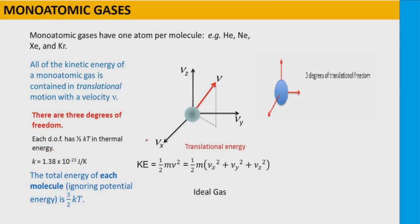In the case of monoatomic gases, it has one atom per molecule — examples include helium, neon, xenon, krypton, etc. This atom can have three degrees of translational motion, and hence a monoatomic gas will have three degrees of freedom. For each degree of freedom, the energy associated is half kT. Therefore, the total energy of the molecule is 3/2 kT. In case of an ideal gas with three components along x, y, and z axes, we write the total kinetic energy as half m into (Vx² + Vy² + Vz²).